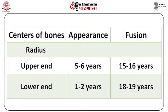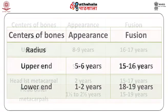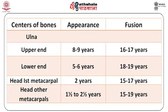At the upper end of the radius, the ossification center appears at five to six years and fusion is complete by 15 to 16 years. The lower end of the radius appears at one to two years and fuses at 18 to 19 years. For the ulna, the upper end center appears at eight to nine years and fuses at 16 to 17 years, whereas the lower end of the ulna appears at five to six years and fuses at 18 to 19 years.